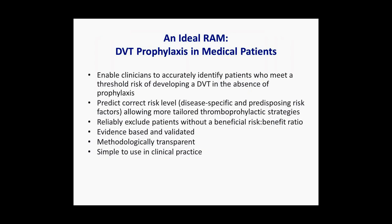So how does an ideal risk assessment model look, especially in the medical patient population? An ideal RAM would enable clinicians to accurately identify patients meeting a threshold risk of developing DVT in the absence of prophylaxis. It should predict the correct risk level incorporating both disease-specific and predisposing risk factors, reliably exclude patients without a beneficial risk-benefit ratio, be evidence-based and validated, methodologically transparent, and simple to use in clinical practice.